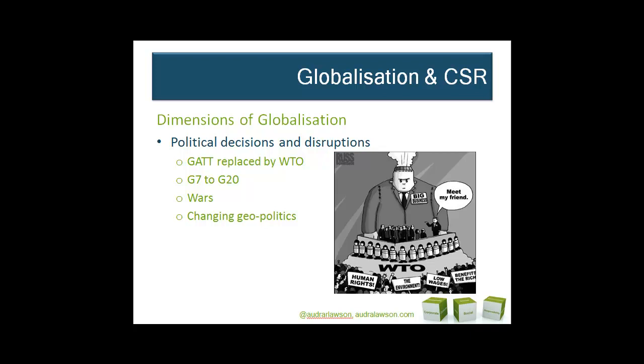First, globalization is often characterized by changing political decisions and disruptions. For example, we might have changing core agreements, like when the General Agreement on Tariffs and Trade was replaced by the World Trade Organization. We could have the evolution of the G7 to the G20. In 1999, there was an inaugural meeting of the seven leading economies to discuss mutual financial interests. This has evolved into a more inclusive group incorporating 19 nations and the EU, accounting for about 85% of gross world production, 80% of global trade, and two-thirds of the world's population. Its goal is to maintain financial stability, but changing global political decisions can threaten to upset that stability because of the ever-changing nature of geopolitics.